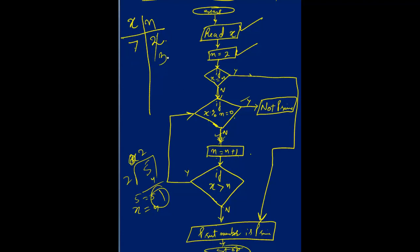Again I check x percent n: now n is 3, so 7 percent 3 — 3 twos are 6, remainder is 1. Not equal to 0, so no. Increment n to 4. Check if x is greater than n — 7 is greater than 4, yes. Loop back again. Now check x percent n with n equal to 4: 7 percent 4 — 4 ones are 4, remainder 3. Not 0, so no. Increment n to 5.